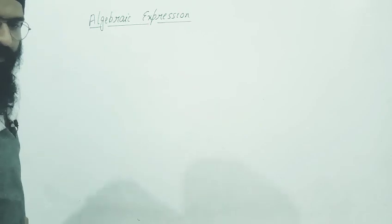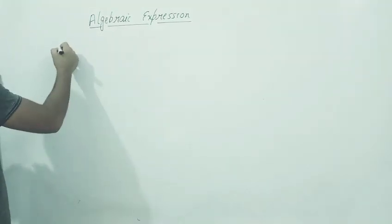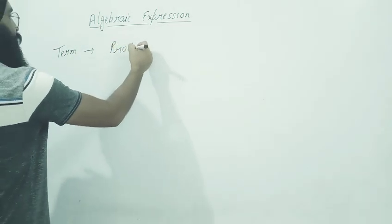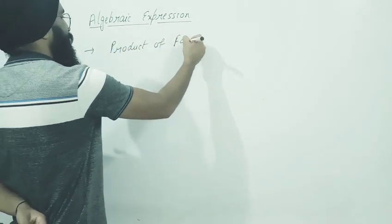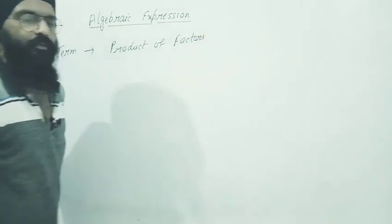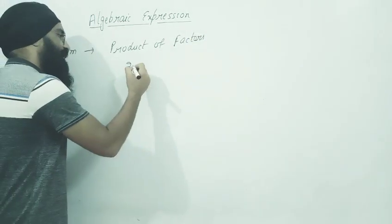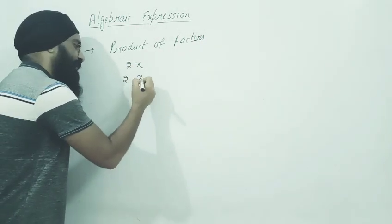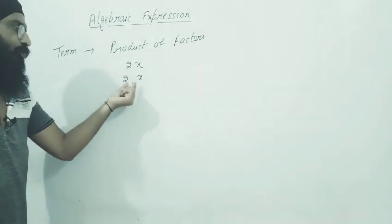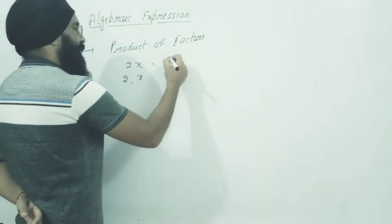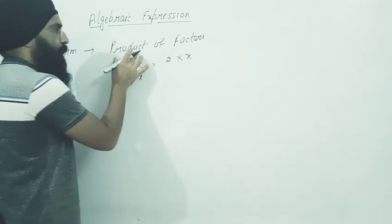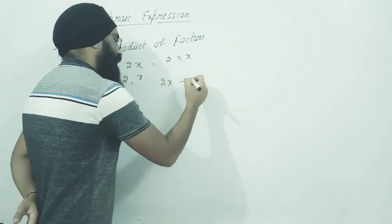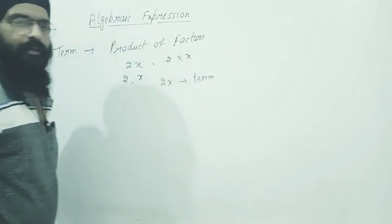Next definition we'll study is term. What is term? Term is the product of factors. Like if I write 2x, when I look at the factors of 2x, the factors are 2 and x. There are two things - one is 2 and one is x. Now we can write it as 2 into x - product means multiply. 2 into x. So 2x together forms one term.